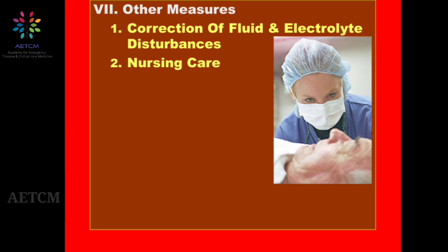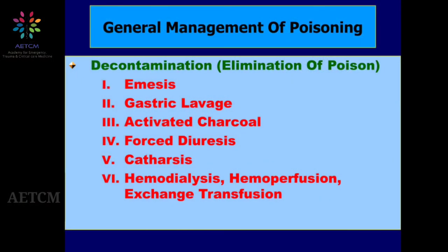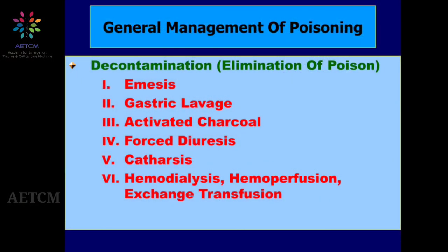That was a quick overview of the general management of a poisoning patient. In the next session we will discuss in detail the general management of poisoning with specifics to decontamination, including emesis, gastric lavage, activated charcoal, forced diuresis, catharsis, and also hemodialysis, hemoperfusion, and exchange transfusion. Thank you.